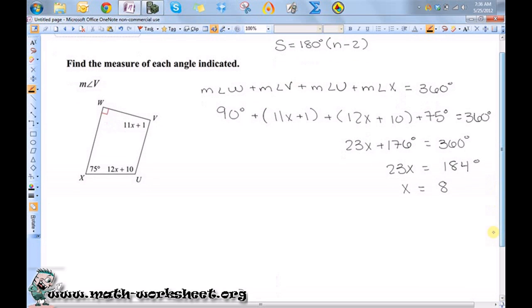We would be done if we were asked to solve for X but we weren't. We were asked to find the measure of angle V. So I know that the measure of angle V is equal to 11X plus 1. So what I need to do is substitute this value in for X.